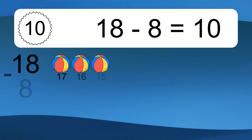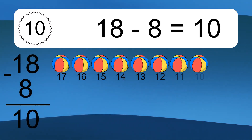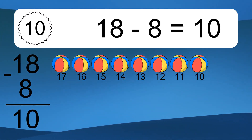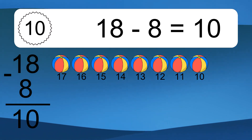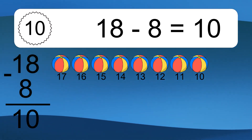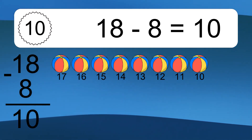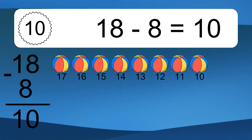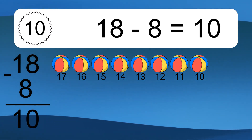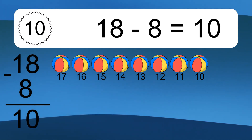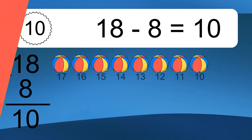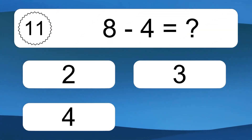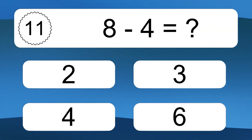18 minus 8 equals what? 18 minus 8 equals 10. Let's count it. 17, 16, 15, 14, 13, 12, 11, 10.